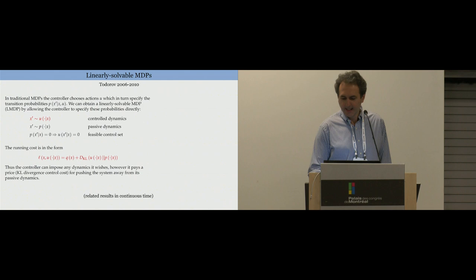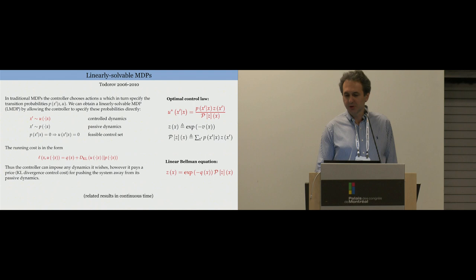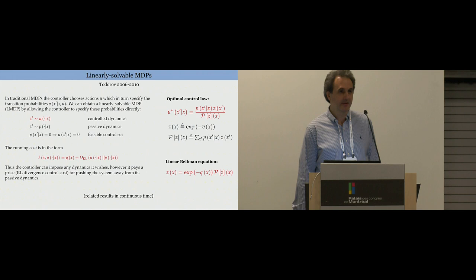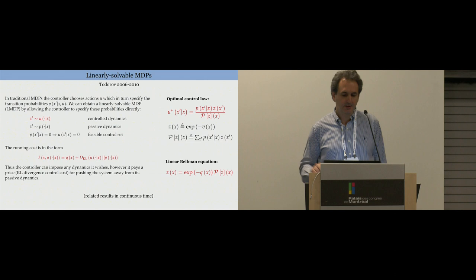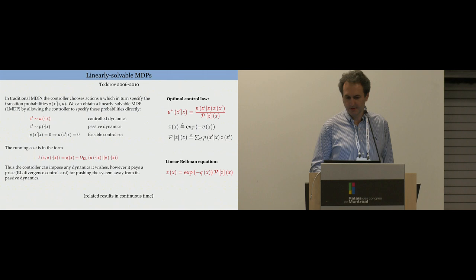This is a very rich family of problems. One interesting thing that comes out is if you have the optimal value function, you exponentiate it and define this z-function, then the optimal control is simply the passive dynamics weighted by the z-function and then normalized. You can take that control law, plug it into a Bellman equation, all kinds of things simplify, and you end up with a Bellman equation that's actually linear in the unknown function z. This p here is just a linear operator. Linear is as good as it gets, short of having an analytical formula.